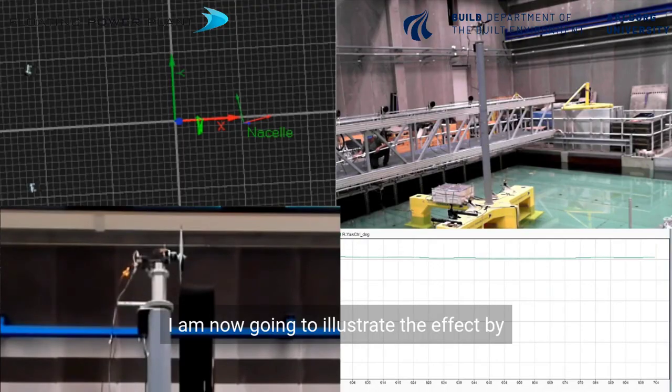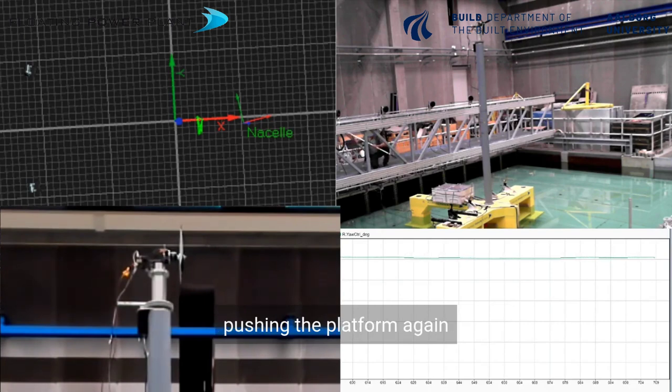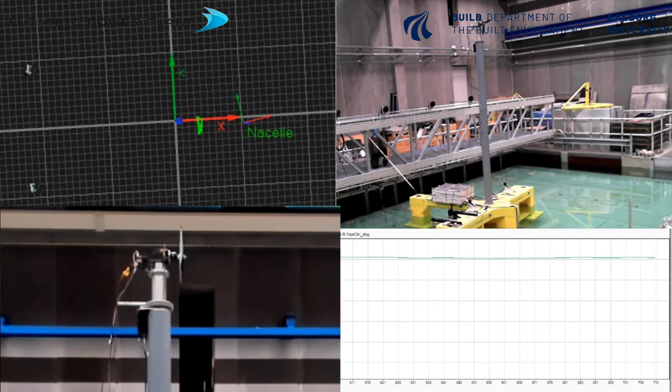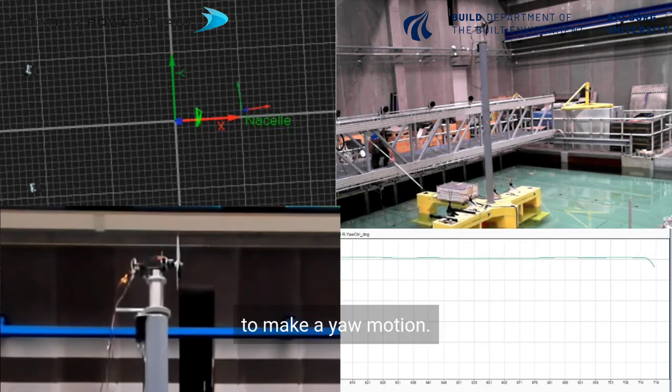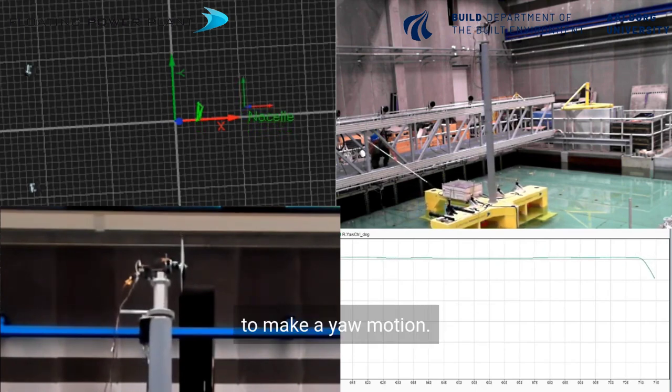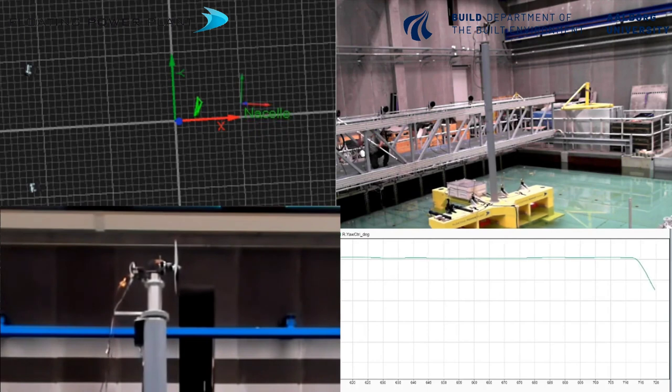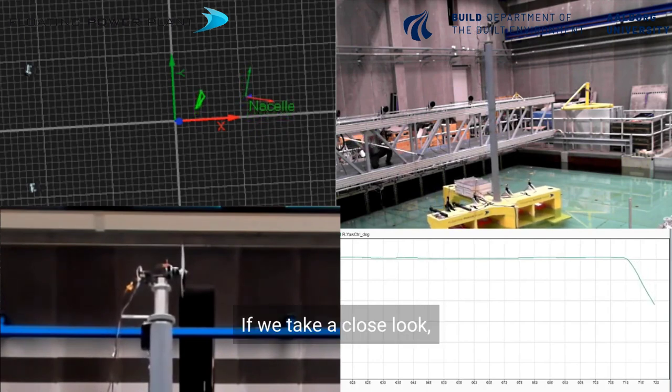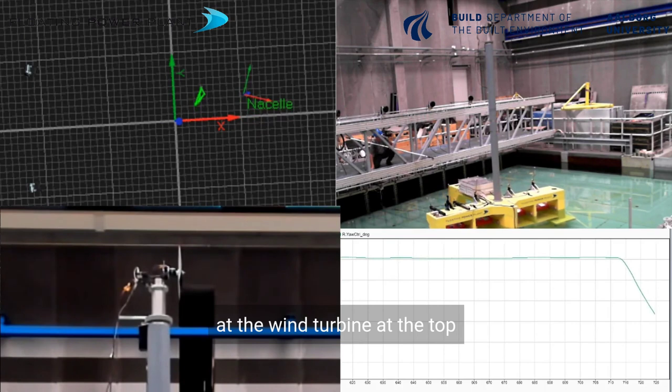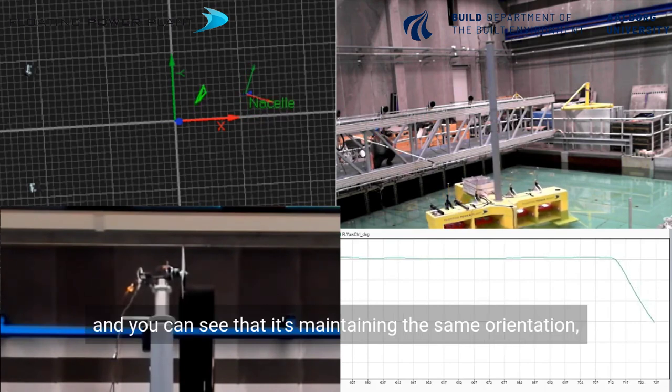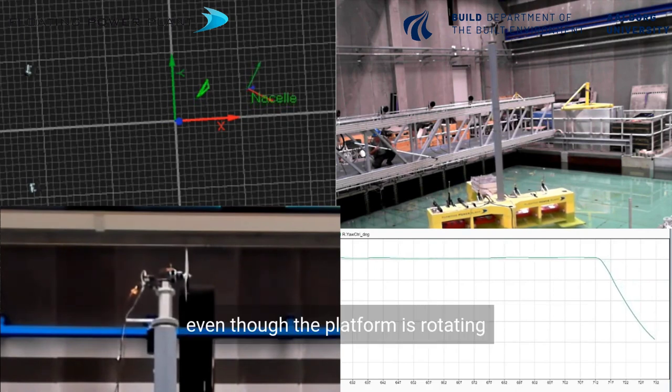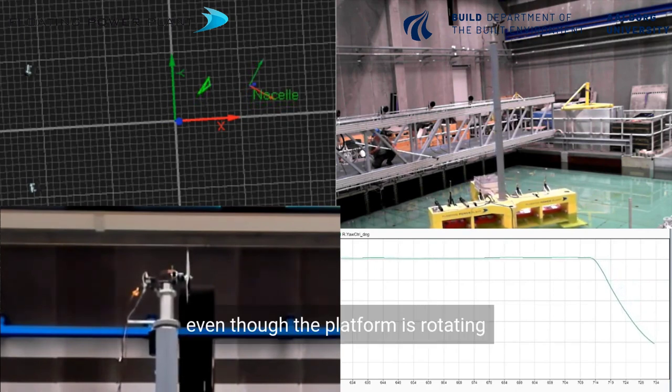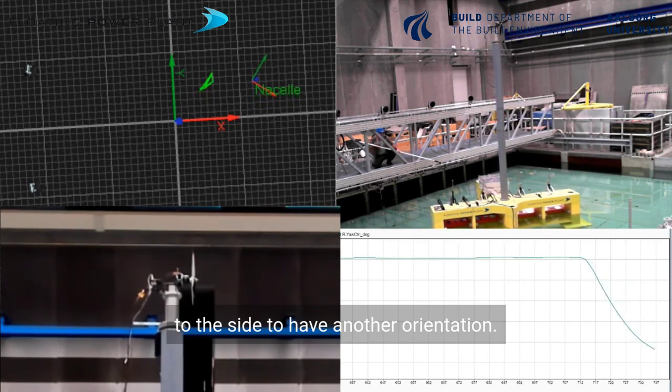I'm now going to illustrate the effect by pushing the platform again to make a yaw motion. Take a close look at the wind turbine at the top and you can see that it's maintaining the same orientation even though the platform is rotating to the side.